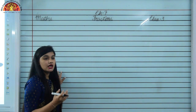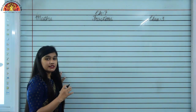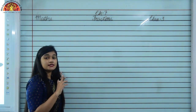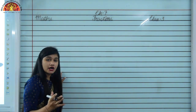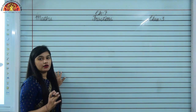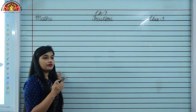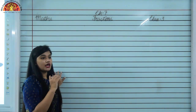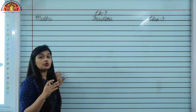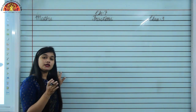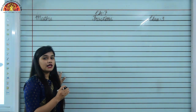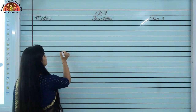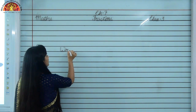Now, what are fractions? When a thing is divided into equal parts, these parts are known as fractions. When we have a whole thing and we are dividing it into equal parts — isko equal parts mein divide kar rahein — then it will be a fraction. So now, how can we read a fraction and how can we write a fraction?